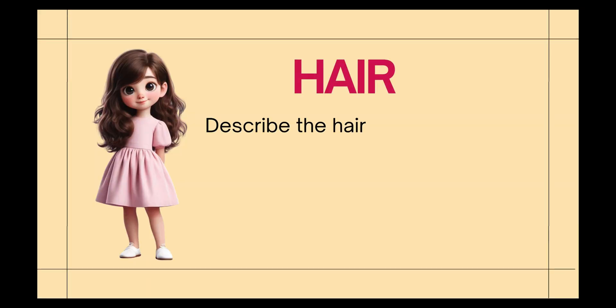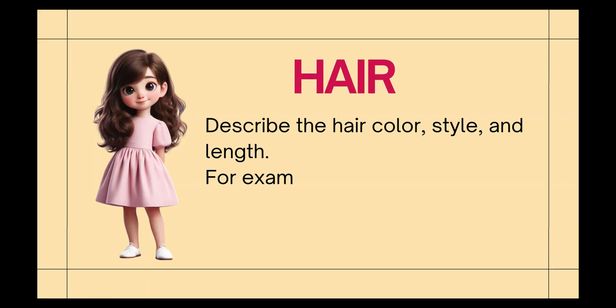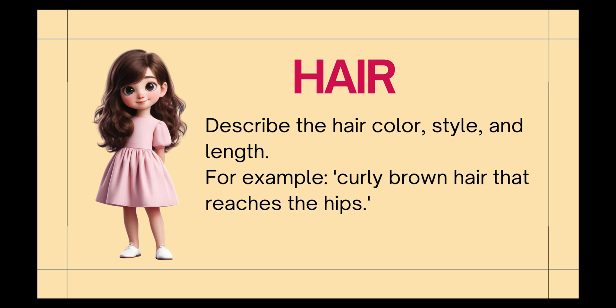Hair: describe the hair color, style, and length. For example, curly brown hair that reaches the hips. It's important to be specific about the hair length — if you only describe it as 'long,' the AI might generate varying lengths, sometimes shoulder length, sometimes mid-back, and other times down to the hips.